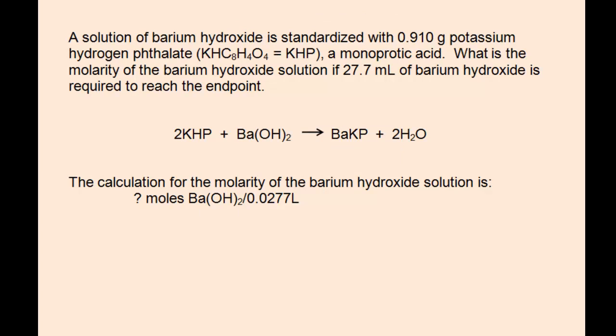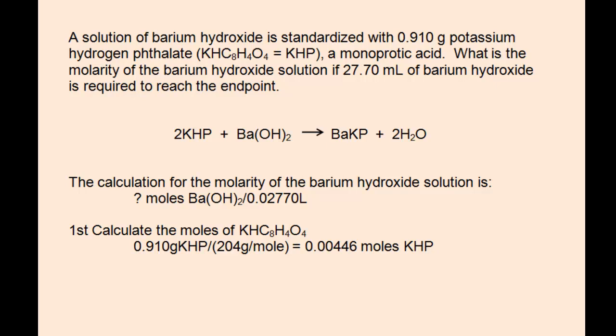One way to approach problems like this is to consider the final calculation. You're going to need to determine some amount of barium hydroxide in moles and divide that by the total amount of barium hydroxide used in the titration. In this case, it was 27.7 milliliters. As in the previous examples, first calculate the moles of the reactant of which you have either accurate molarity or accurate mass measurement.